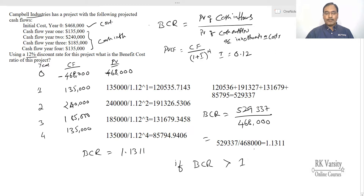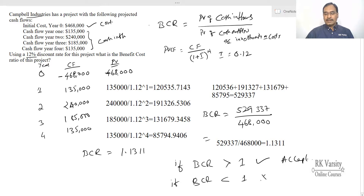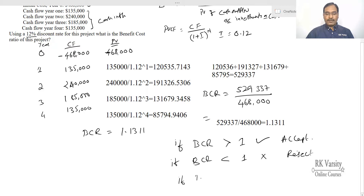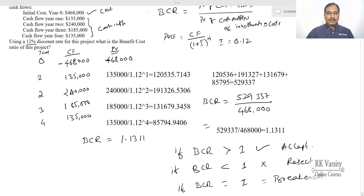The decision criteria: if the benefit-cost ratio is greater than one, the project is economically satisfactory and you accept it. Here the benefit-cost ratio is 1.1311, which is greater than one, so we accept the project. If the benefit-cost ratio is less than one, reject the project. If it equals one, this is breakeven — the project is yielding exactly your cost of capital or required rate of return.